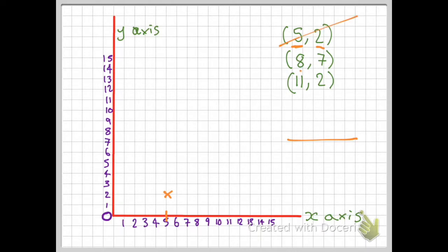The second one is (8,7). So the first number is an 8, so I'm going to go along to 8 and up 7. Always go along the corridor and then up the stairs.